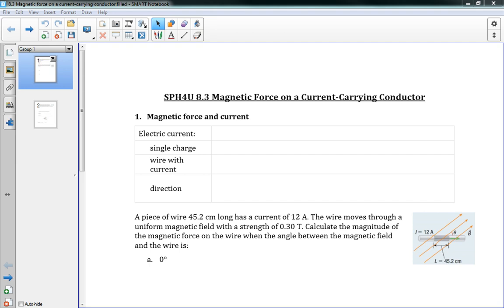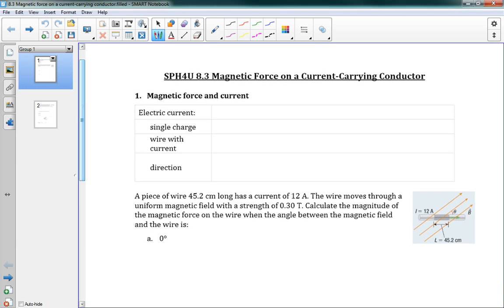Okay, 8.3 magnetic force on a current carrying conductor. So last lesson we saw what kind of magnetic force we would have on a single charge, and now we're talking about if we have a wire and we've got current flowing through that wire, what kind of magnetic force will we have on that thing?